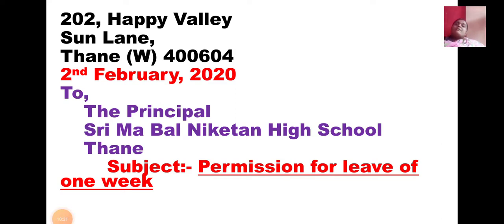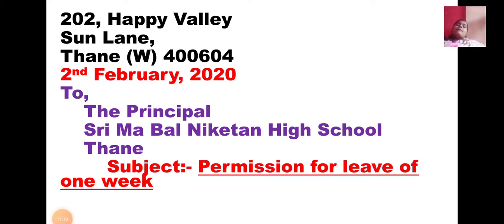Next comes the receiver's address. You can write it just below, starting with 'To,' then 'The Principal,' - be careful with the spelling: P-R-I-N-C-I-P-A-L. Many students write it wrong as 'P-L-E' at the end. Then write the school's name, for example 'Shreema Baliketan High School,' and the location such as 'Thane.' In the receiver's address, pin code is not necessary - pin code is only needed in the sender's address. So sender's address, date, and receiver's address are now complete.